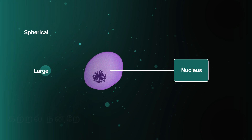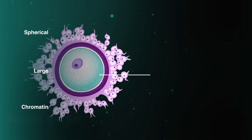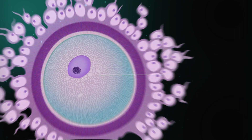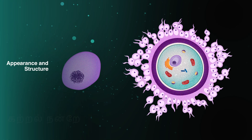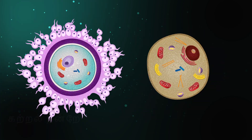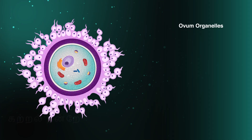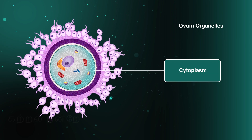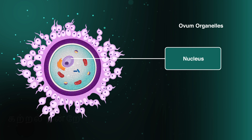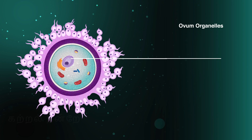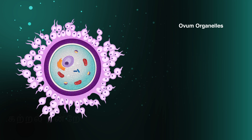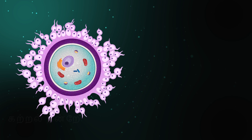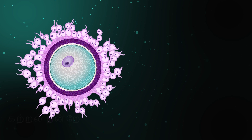A spherical and large nucleus containing chromatin is present within the ooplasm. Inside this nucleus, there is a well-defined nucleolus. In terms of appearance and structure, the ovum differs from normal cells. Hence, special names are assigned to the organelles of the ovum: the cytoplasm is referred to as ooplasm, the nucleus is referred to as the germinal vesicle, and the nucleolus is referred to as the germinal spot. It is important to note that some of these terms are no longer commonly used in modern terminology.